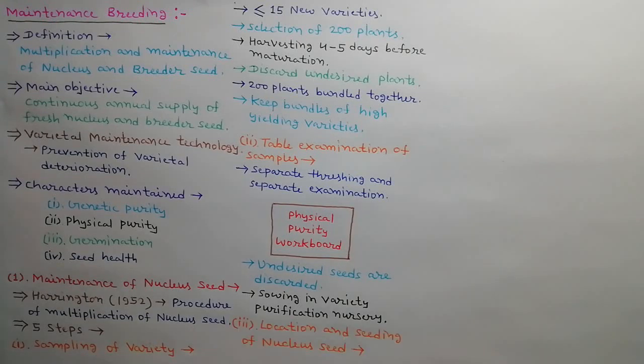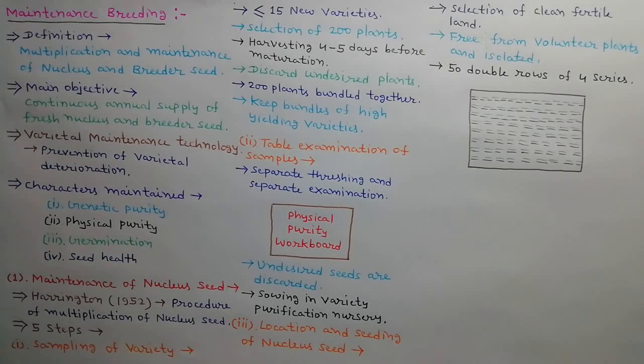Third step is location and seeding of nucleus seed. 200 or less progenies must be grown in 50 double rows of 4 series. There must be sufficient spacing between plants and between rows so that examination can be done easily during crop growth.